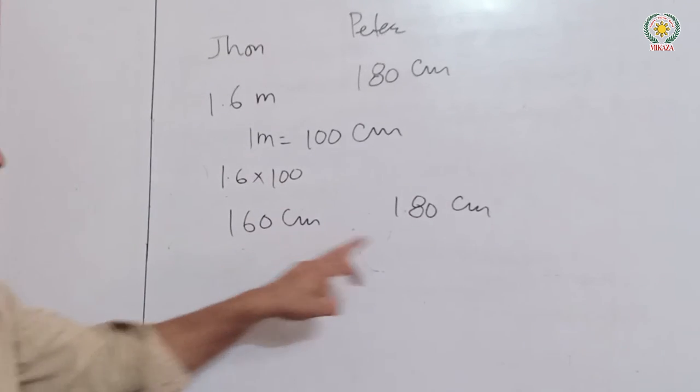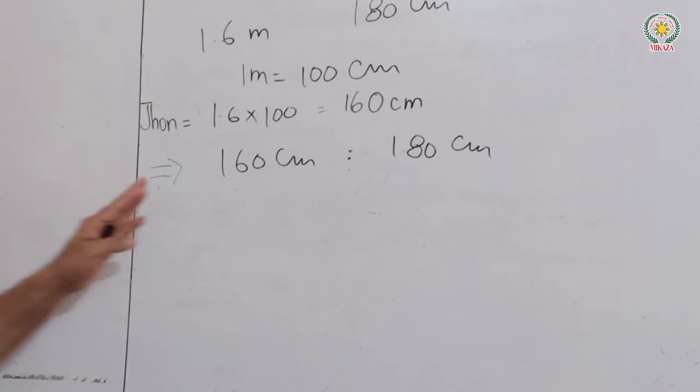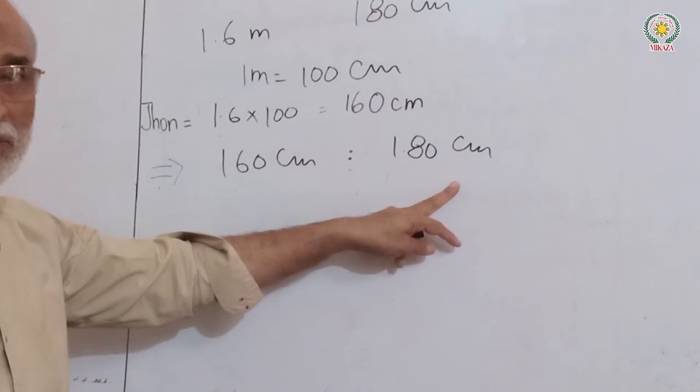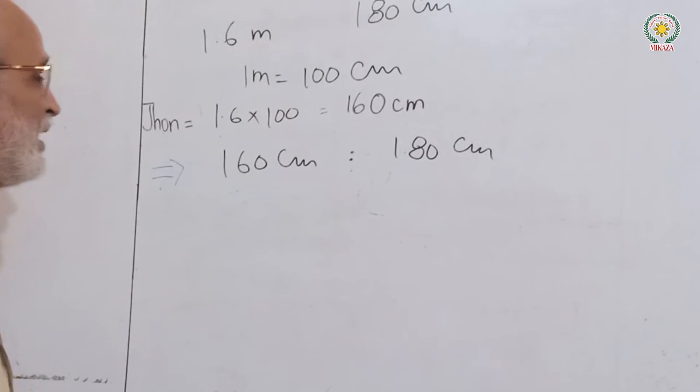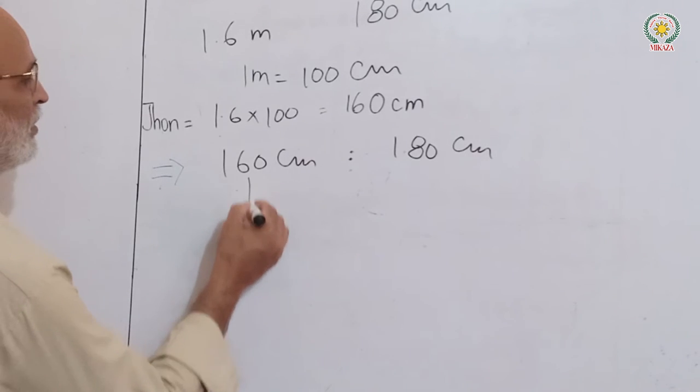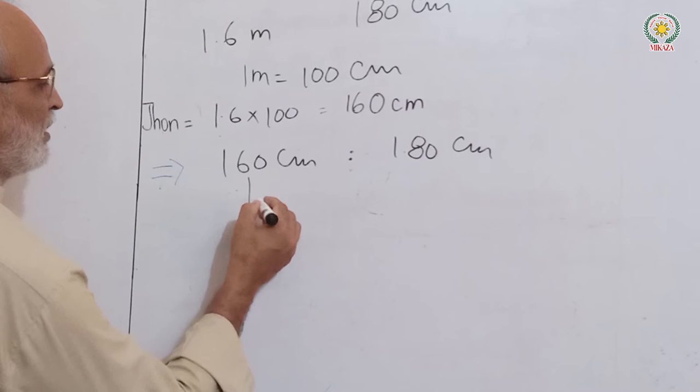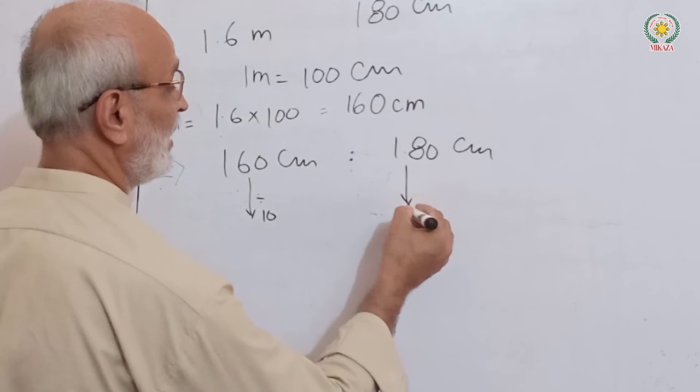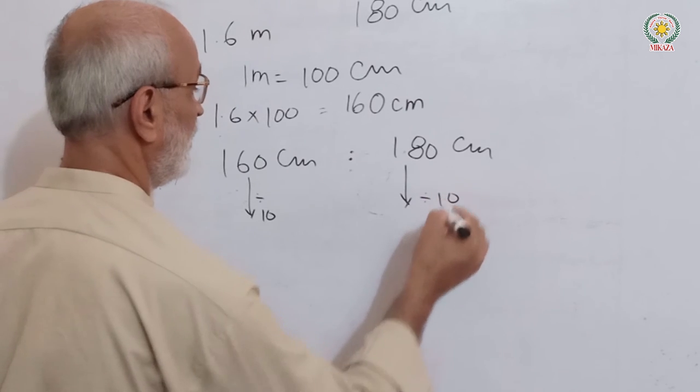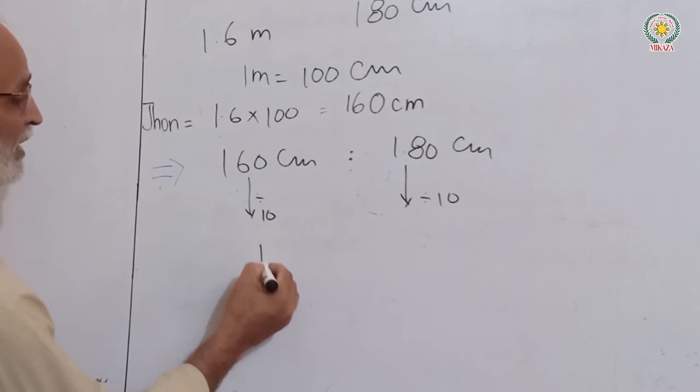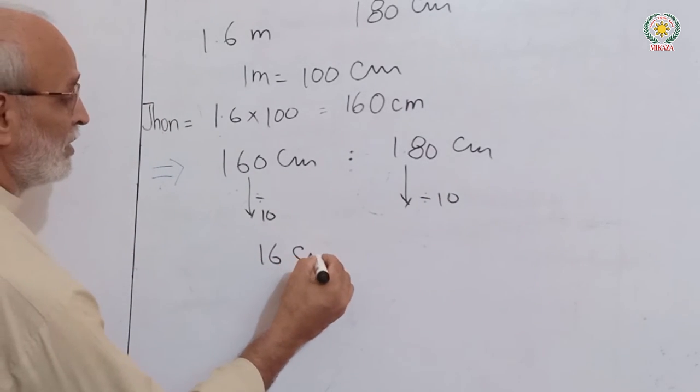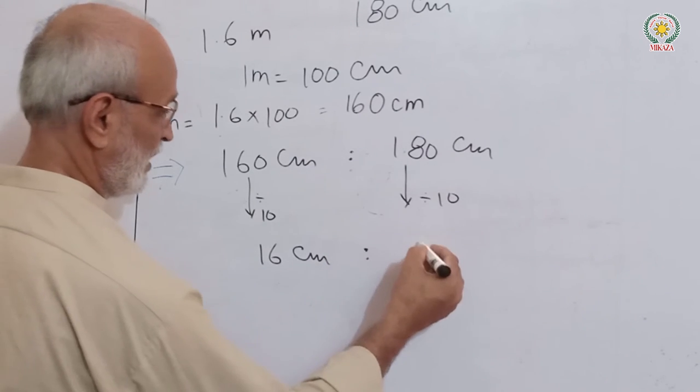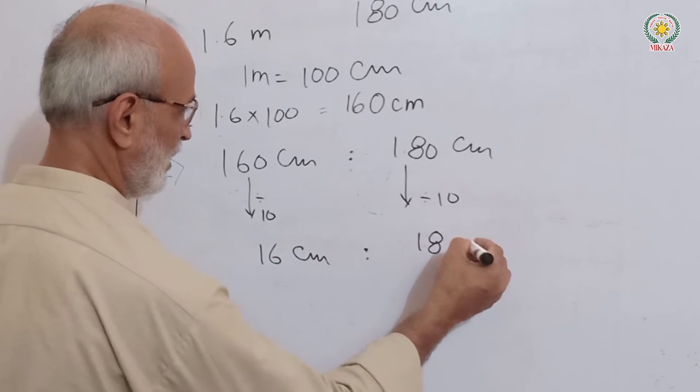Now both are in centimeters. The ratio is 160:180. We can simplify by dividing both by 10. 160 divided by 10 is 16, and 180 divided by 10 is 18.